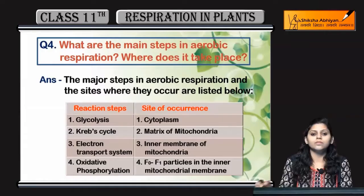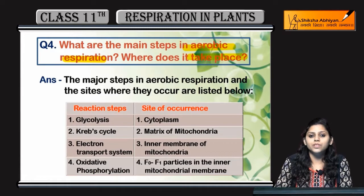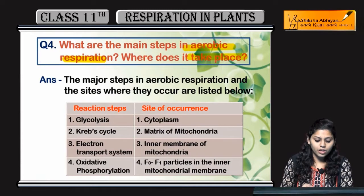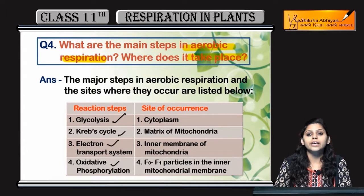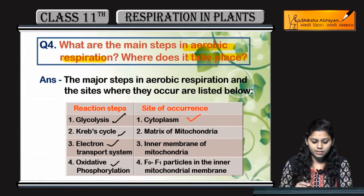Question number four: What are the main steps in aerobic respiration and where do they take place? The main steps of aerobic respiration are glycolysis, Krebs cycle, electron transport system, and oxidative phosphorylation. The site of occurrence — glycolysis takes place in the cytoplasm, and the Krebs cycle takes place in the matrix of mitochondria.